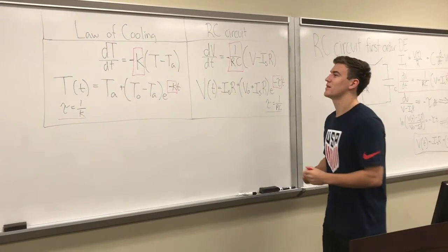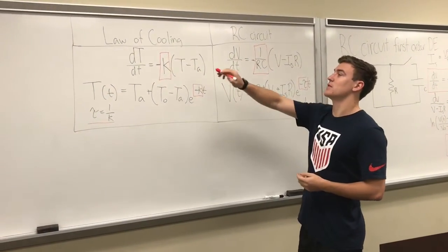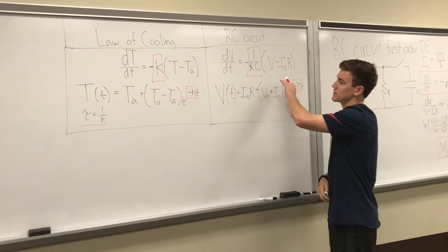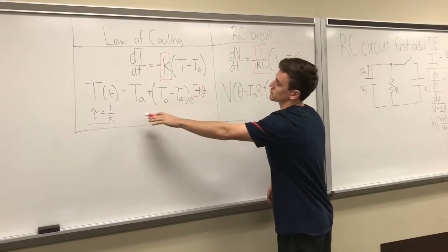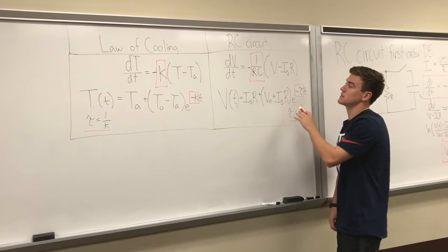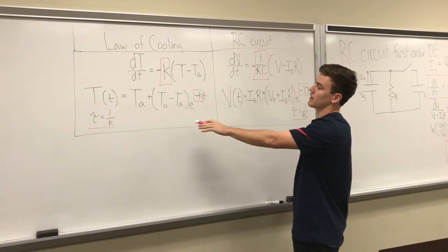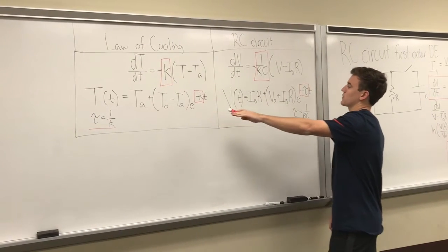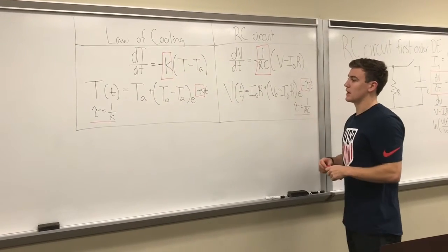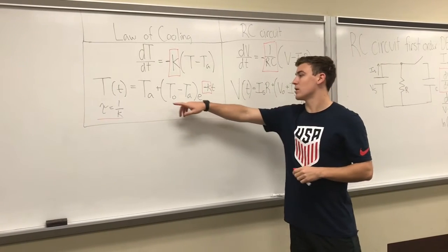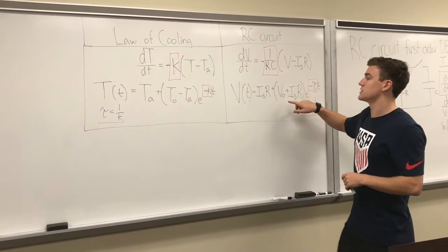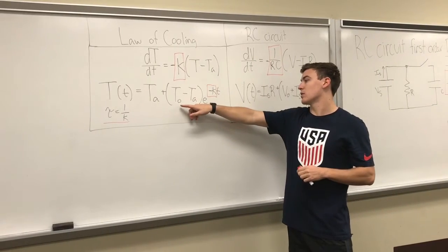Here you can directly compare the analogy between Newton's Law of Cooling and the RC circuit. The differential equations have matching spots as tau equals 1 over K, and tau equals 1 over RC in the RC circuit. As this follows down, they have very direct correlation, with tau showing back up here, and IR taking the form of your surrounding temperature, and your voltage taking the shape of temperature.